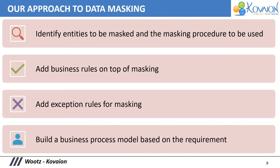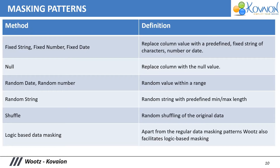Our approach to data masking: first, we identify entities to be masked and the masking procedure to be used. We add business logic and exception rules on top of masking, then build a process model based on the requirement. A process model is a BPMN-like visual model in OATS that depicts the steps involved in the process, which is then executed to perform the functions. Different masking patterns — like fixed value, random value, none value, or shuffled value from the original data set — and logic-based masking can all be done as part of this application.